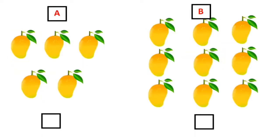Now we can see 2 sets of mangoes. In set A there are few mangoes. In set B there are few mangoes. Let's count the mangoes in set A. Let's start. 1, 2, 3, 4 and 5.